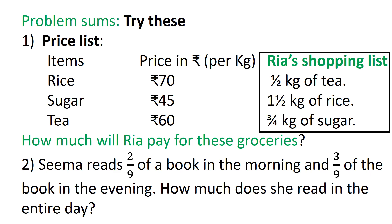Children, try to do these two problem sums on your own. Question 1: the price list of items — rice, sugar and tea — are given as rupees 70, rupees 45 and rupees 60 respectively. Ria's shopping list is given to you. Find out how much money Ria will pay for these groceries. Question 2: Seema reads 2 ninths of a book in the morning and 3 ninths of the book in the evening. How much does she read in the entire day?